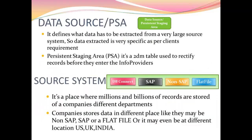Data source: it defines what data has to be extracted from a very large source system, so the data extracted is very specific as per the client's requirement. Persistent staging area (PSA): it is a two-dimensional table used to rectify records before they enter the info provider. Source system: it is a place where millions and billions of records are stored from a company's different departments. Companies store data in different places — they may be non-SAP, SAP, a flat file, or even at different locations like USA, UK, or India.